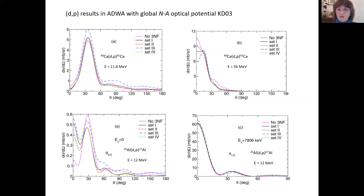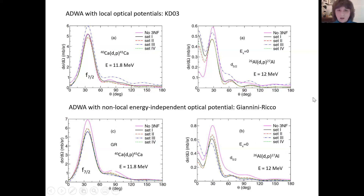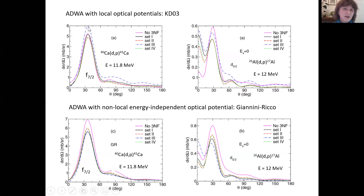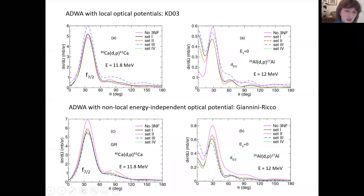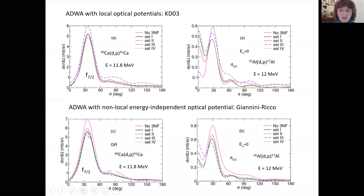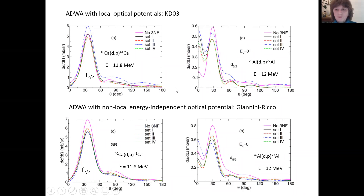Calculations using the non-local optical potential Giannini-Rico — which is energy-independent — show a different picture. For calcium with the local potential KD003, adding three-nucleon force resulted in either strong increase or slight decrease of the cross section. With the non-local Giannini-Rico potential, any potential added to the optical potential leads to a decrease in the cross section. For aluminum-27, we also see a different contribution from three-nucleon force.